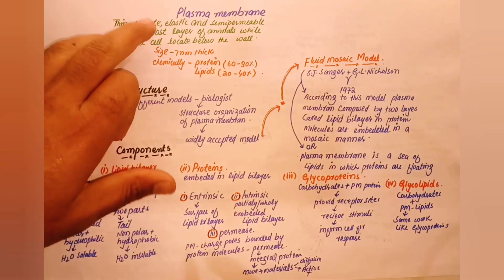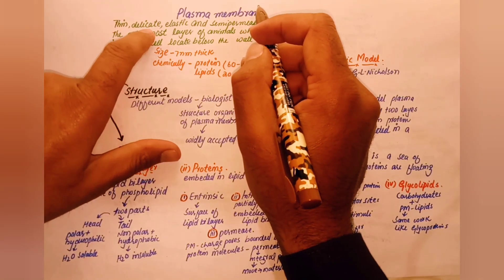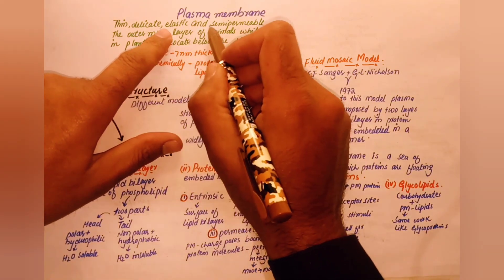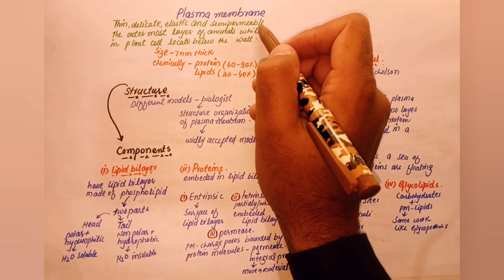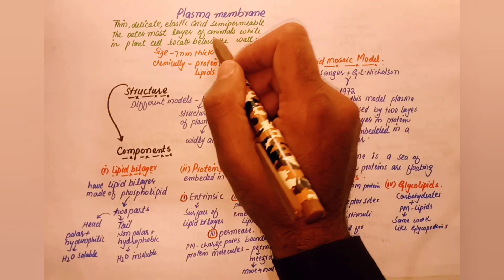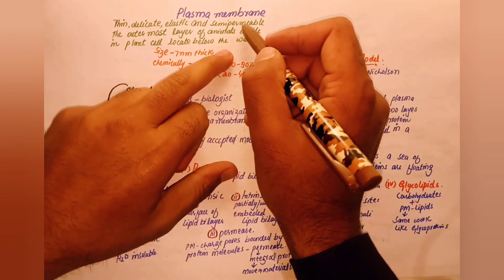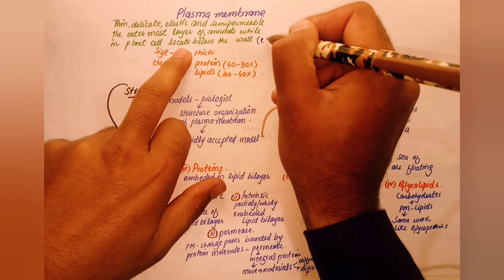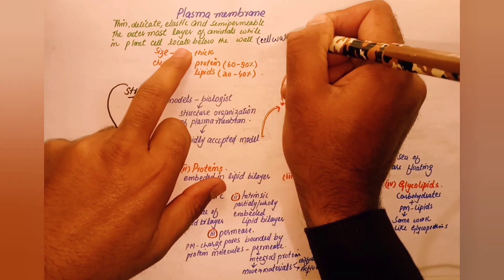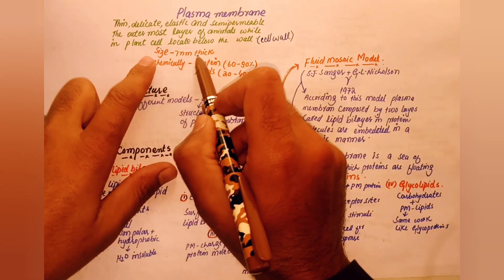Bismillahirrahmanirrahim, Assalamu Alaikum students. Today the topic is the plasma membrane. The plasma membrane is thin, delicate, elastic, and semi-permeable. It is the outer layer of animal cells, and in plant cells it is located below the cell wall. Its thickness is 7nm.